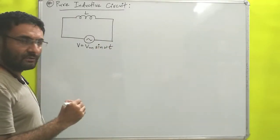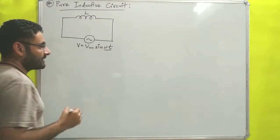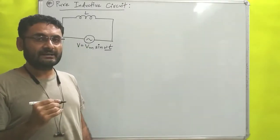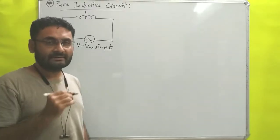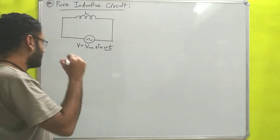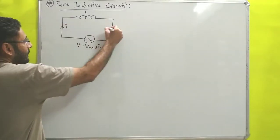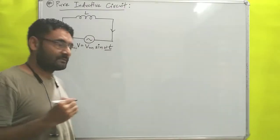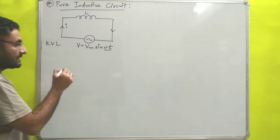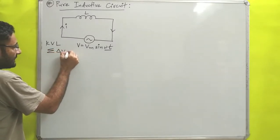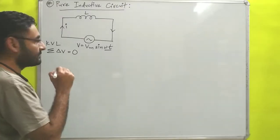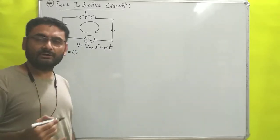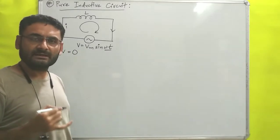Here Vm is the maximum value of voltage or potential, and omega t is known as phase. In AC supply, current is changing its direction 100 times in a second. For our convenience, we will consider that for a particular time, current is flowing in the clockwise direction. After that we can apply Kirchhoff's Voltage Law, known as KVL. KVL states that the summation of change in potentials across a loop is 0. We will consider one loop in the direction of current — you can also consider it in the opposite direction and the answer would be the same.